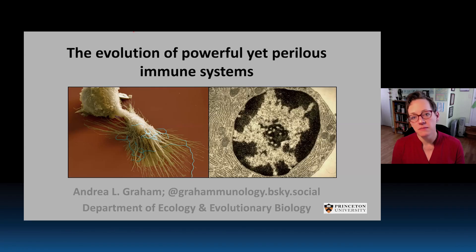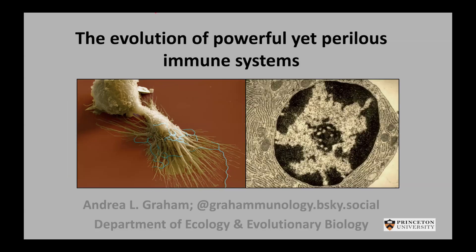I'm Andrea Graham, and I am an evolutionary ecologist who is just fascinated by mammalian immune systems, in particular, how evolution has led to the powerful yet perilous immune systems that we are able to deploy against parasites in modern times, but that also make us susceptible to inflammatory and autoimmune diseases.